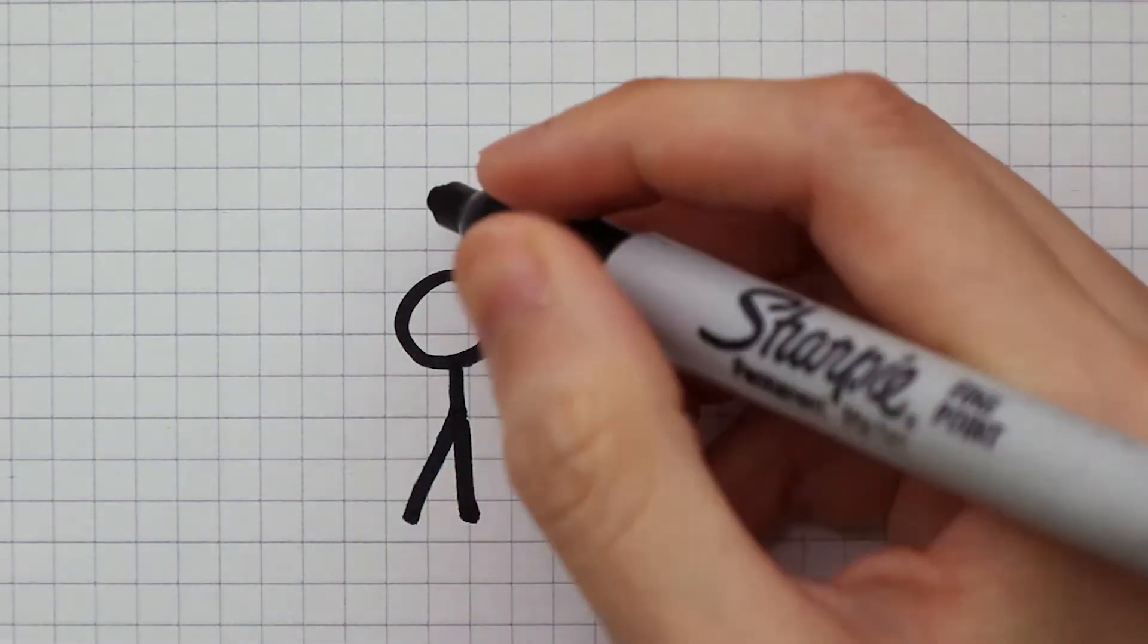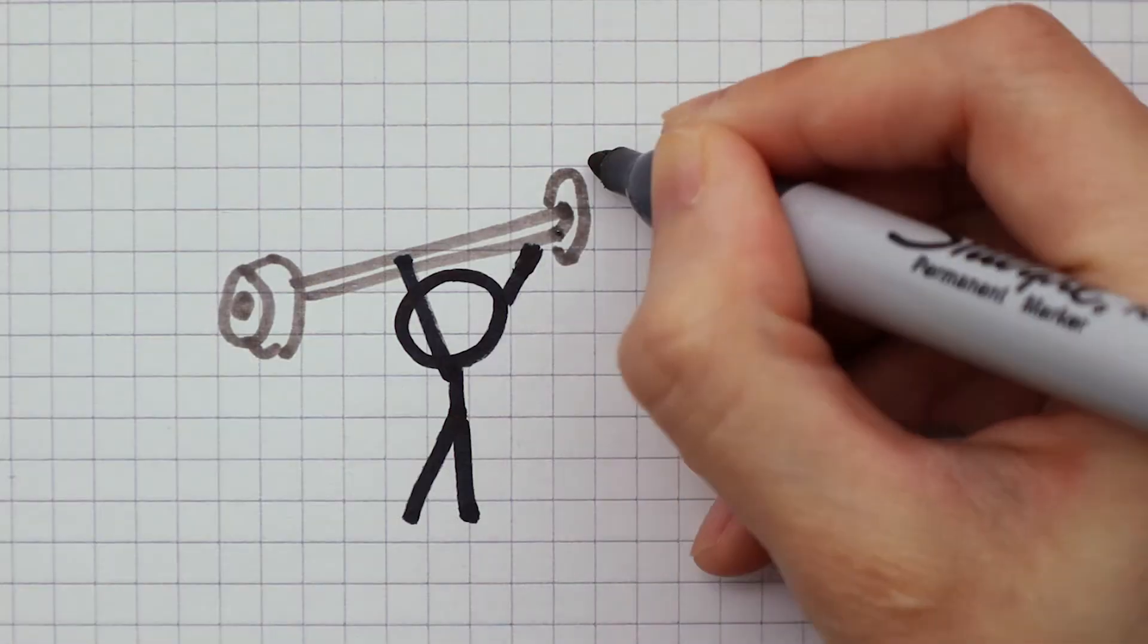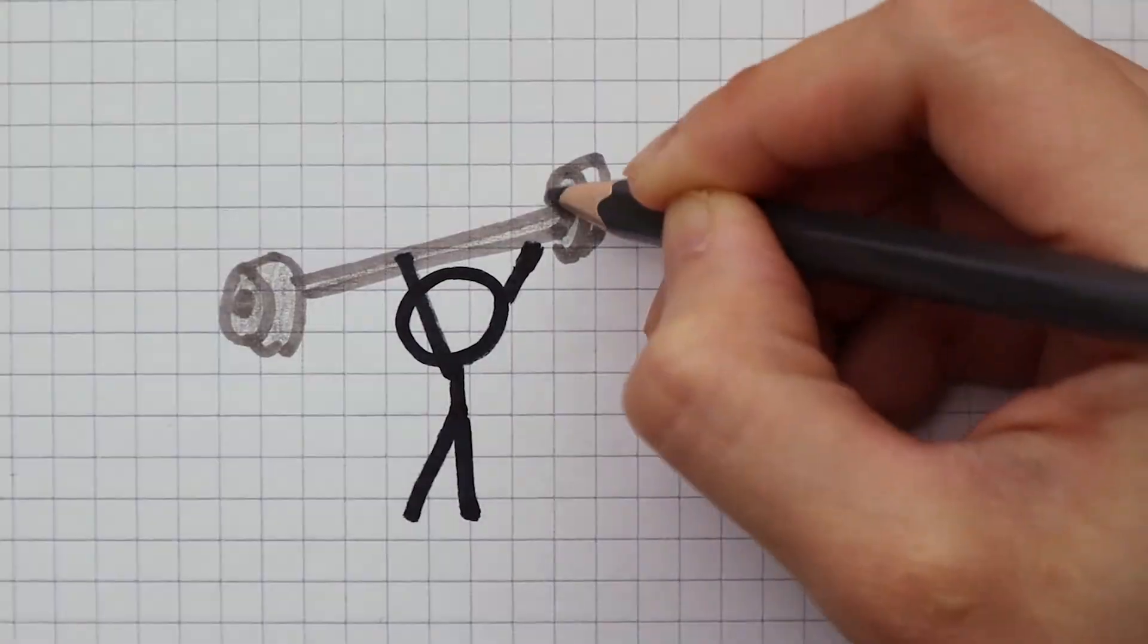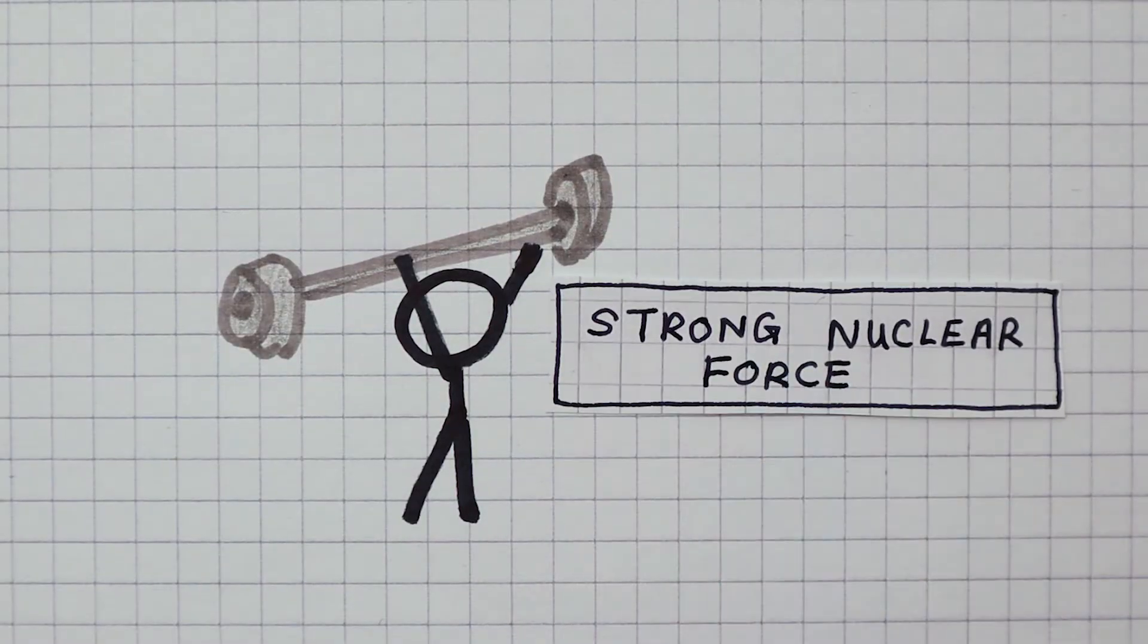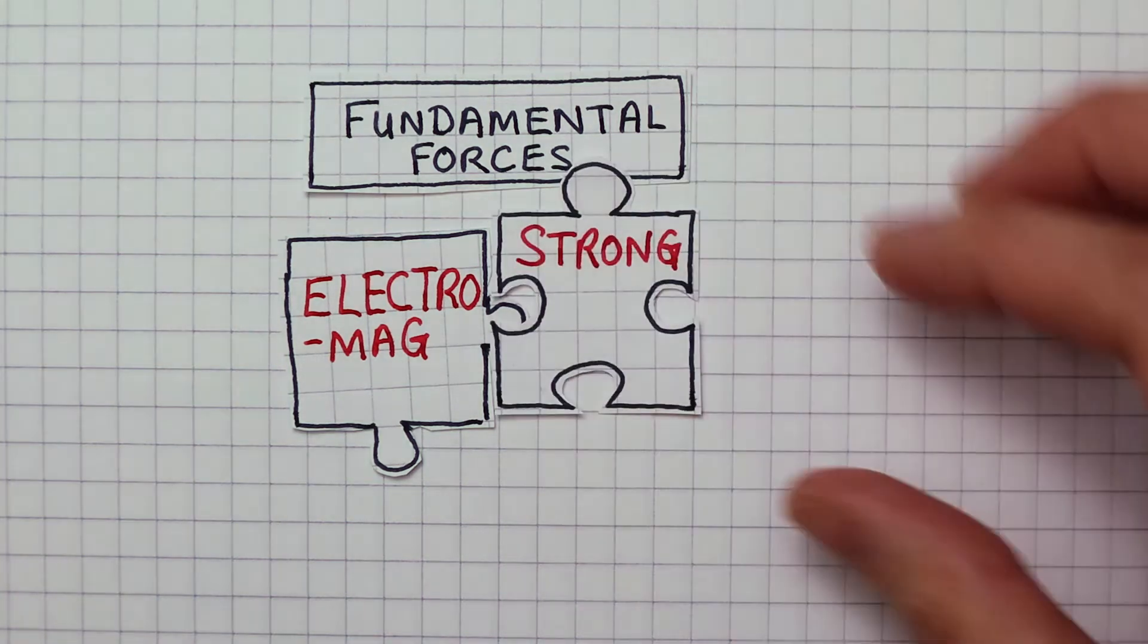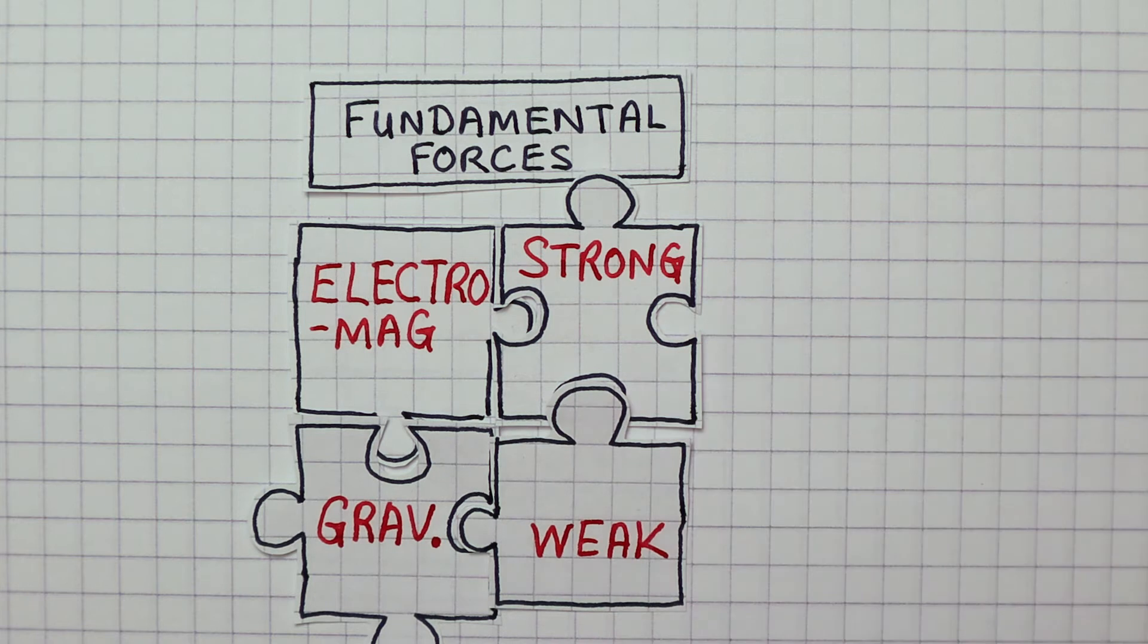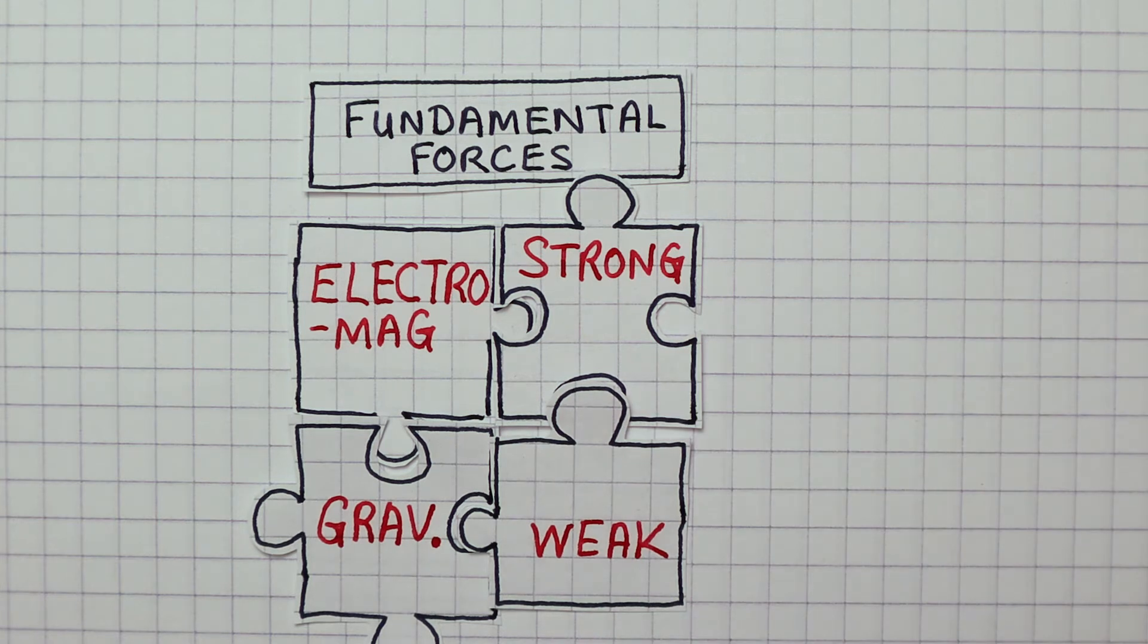This tells us that there must be another mysterious force that overcomes the repulsive electromagnetic force. Here is where the strong nuclear force comes in. Just like the electromagnetic force, the strong nuclear force is another one of the four fundamental forces, and it acts to hold the nucleus together.